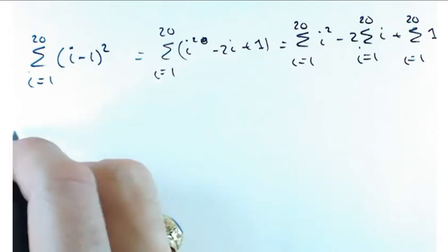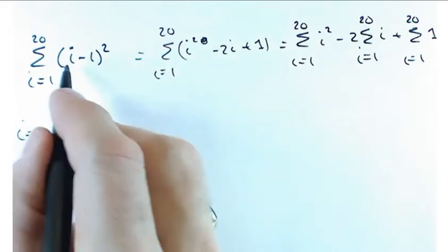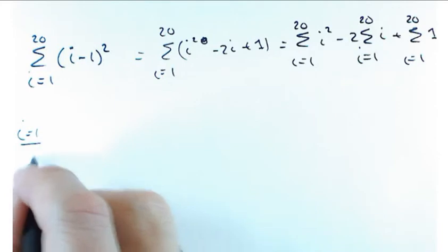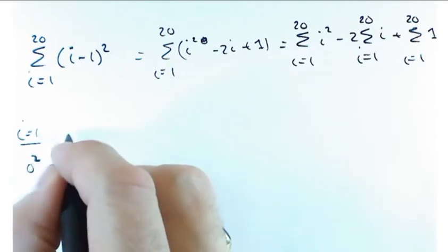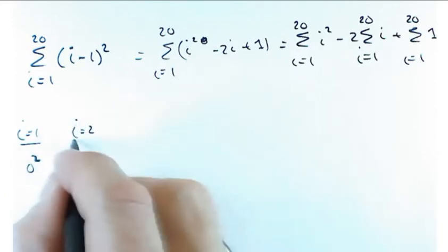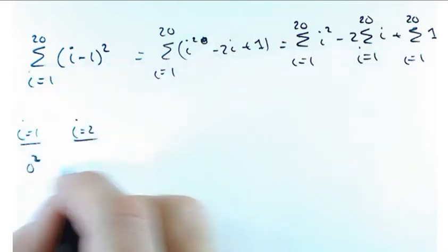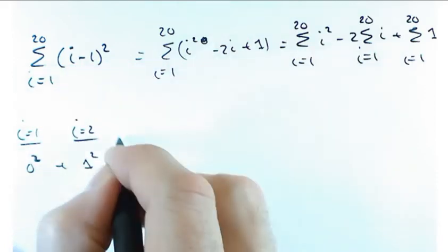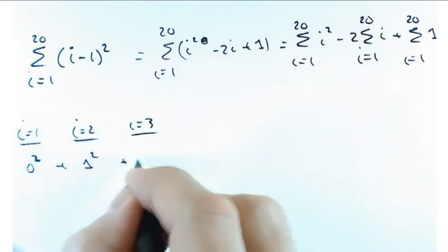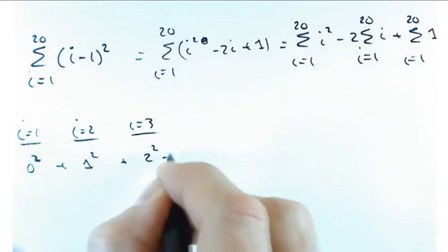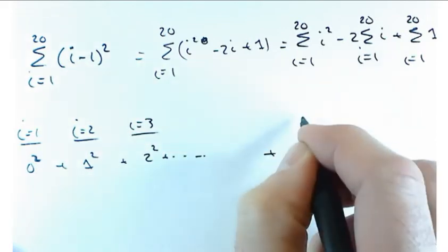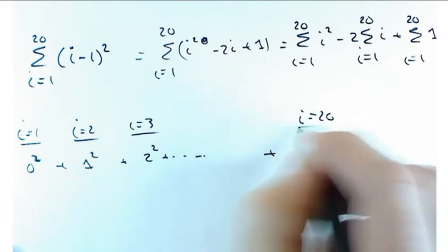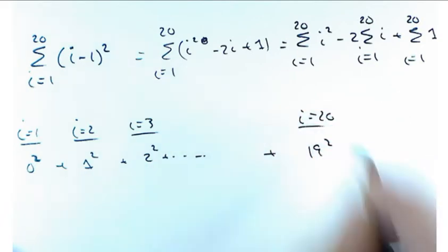So, at I equals 1, if I put in a 1 here, I get 0 squared, right? At I equals 2, if I put in a 2 here, I get 1 squared plus I equals 3, 2 squared. In fact, where does this end? 19 squared. Good.